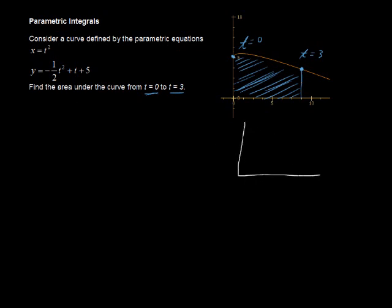If you have some function defined parametrically, and you want to find the area between time t equals alpha, I'll give it to you the way books give it to you, and t equals beta, then this is what you would use.